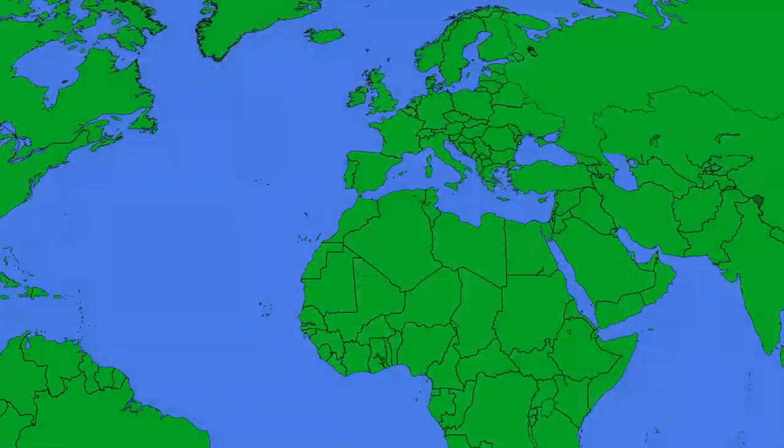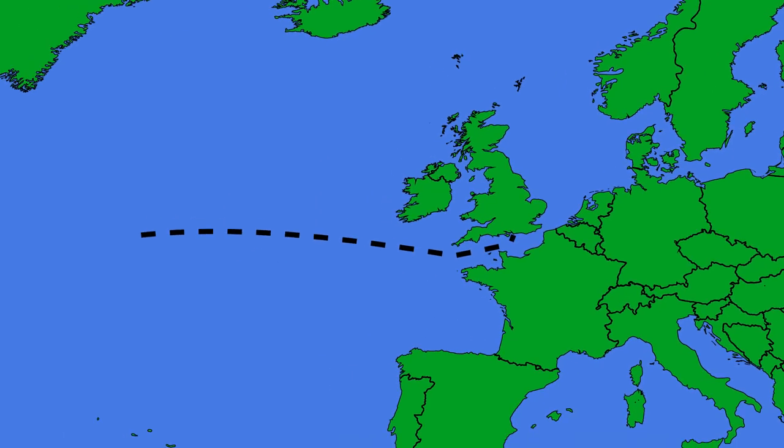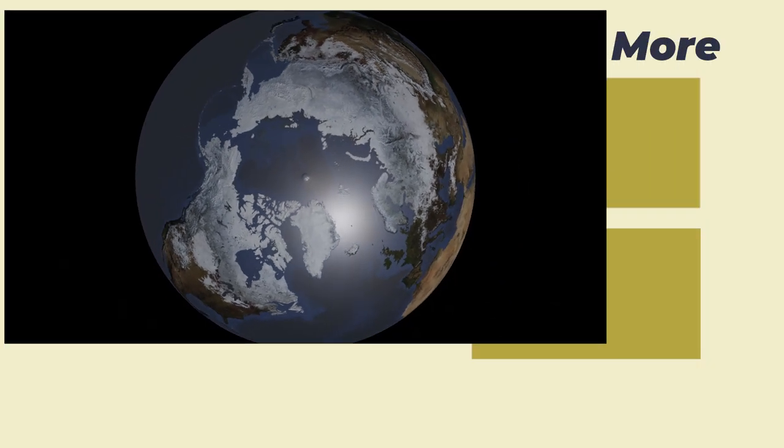So, next time you are crossing an ocean, you'll understand that even if your track doesn't look straight, you're probably still on the shortest route, and that's because of the shape of the earth. Hopefully you've enjoyed today's topic.